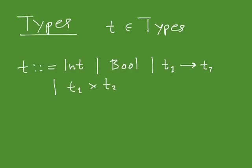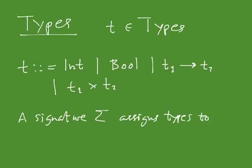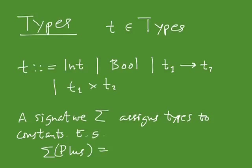We also assume a signature that assigns types to constants. For instance, plus would have type int × int → int in the signature. So the signature tells us the types of the constants. Now we're ready for the type judgments, since we've defined the set of types.